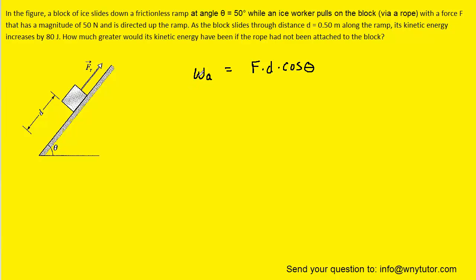And what we'll do is call that work WA. The A would just represent applied. And that just means that when lifting an object, we have to apply a force. And we can see in the diagram that indeed a force is being applied in order to lift this block up the ramp.